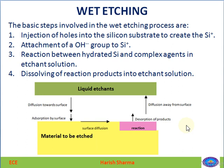The first step is injection of holes into the silicon substrate, creating Si⁺ ions which combine with silicon. After that, OH⁻ ion groups combine with Si⁺ to make Si-OH. This is followed by a reaction between the hydrated silicon and a complexing agent in the reactant solution, and finally dissolving the byproducts in the solution.